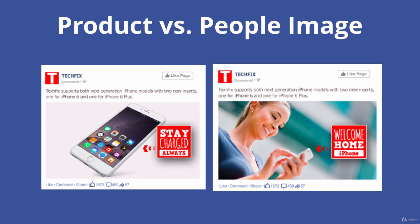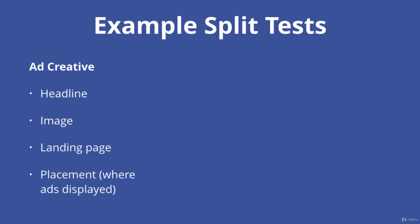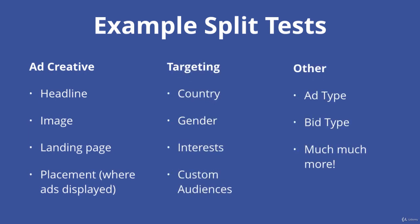These split tests are pretty easy to set up in Facebook. In terms of ad creative, you can test the headline, different images, the landing page you send people to, and placements — does Instagram work better than Facebook newsfeed or Facebook mobile? In terms of targeting, you can try different countries, different genders, different interests, different custom audiences such as website custom audience versus email custom audience. Other variables include ad type — image versus video — and bid type. Testing is a big part of Facebook ads and a real key to success to find out what really works for you.